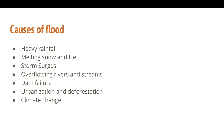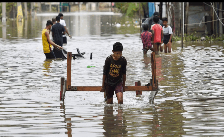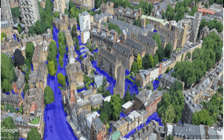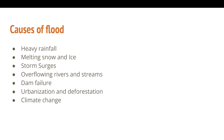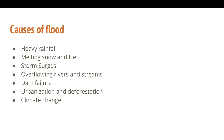Flooding can be caused by multiple factors. The major cause may be heavy rainfall. Other causes include melting of snow and ice, storm surge, overflowing rivers and streams, and dam failure. There are also indirect causes such as urbanization, deforestation, and climate change.